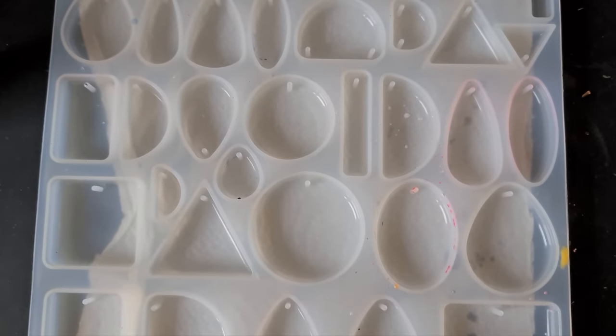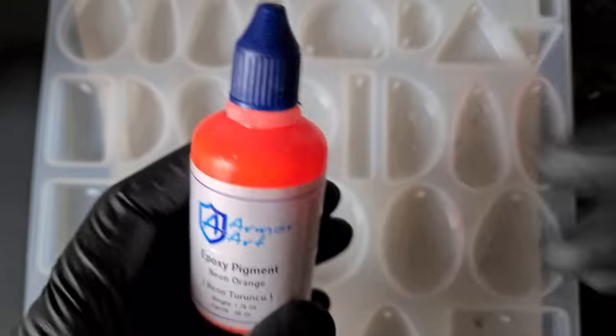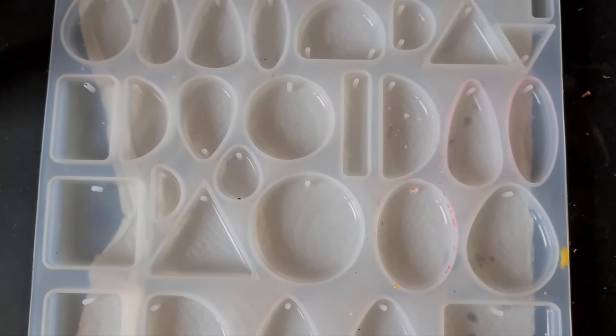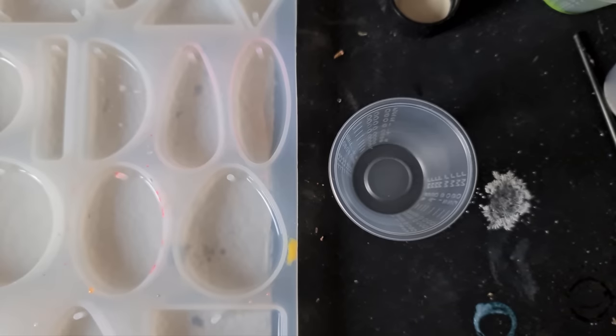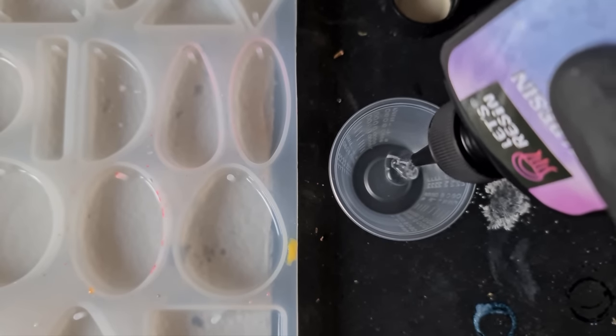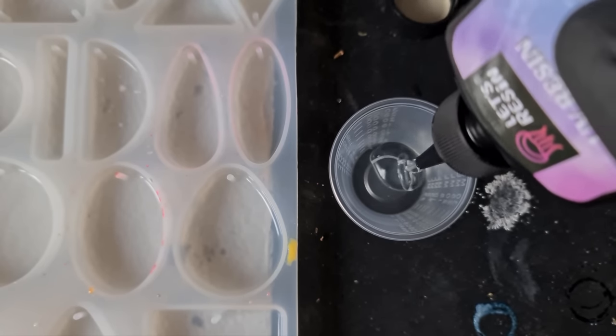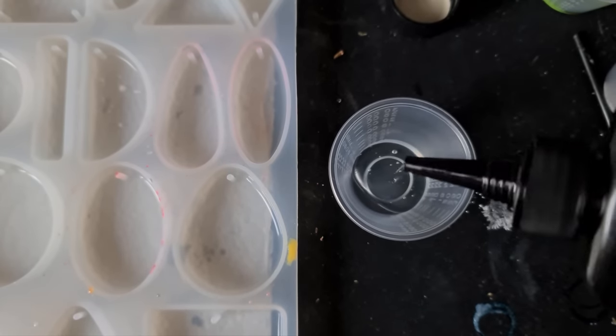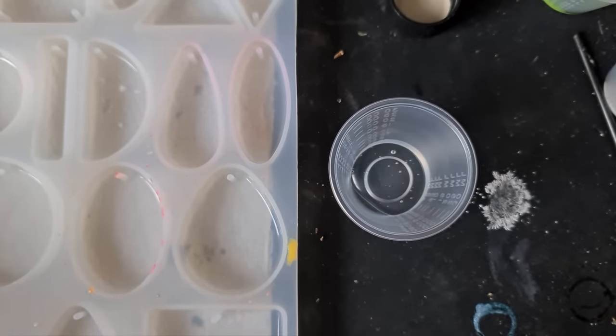I'm going to be using pigment pastes for mine and I might add some glow powders. To begin with, I'm just going to add some UV resin to my mixing cup and we're going to go with a red pigment paste and yellow.